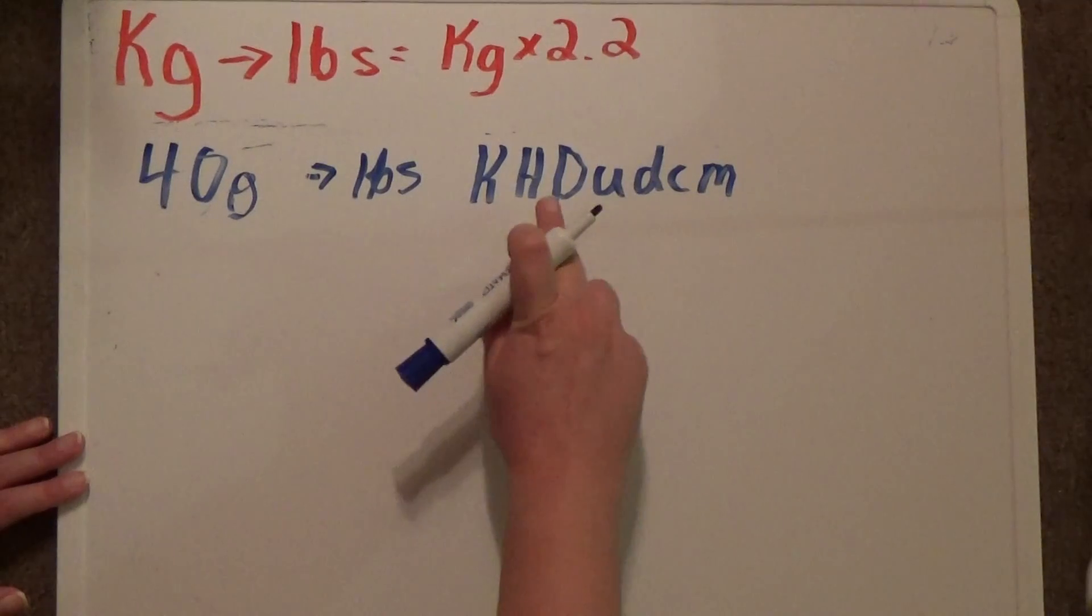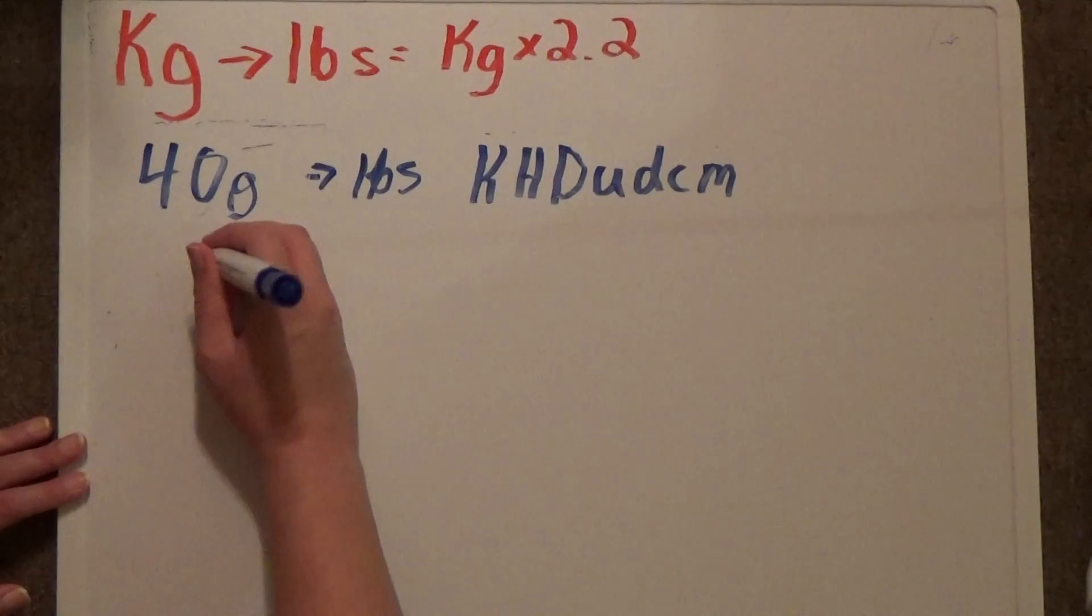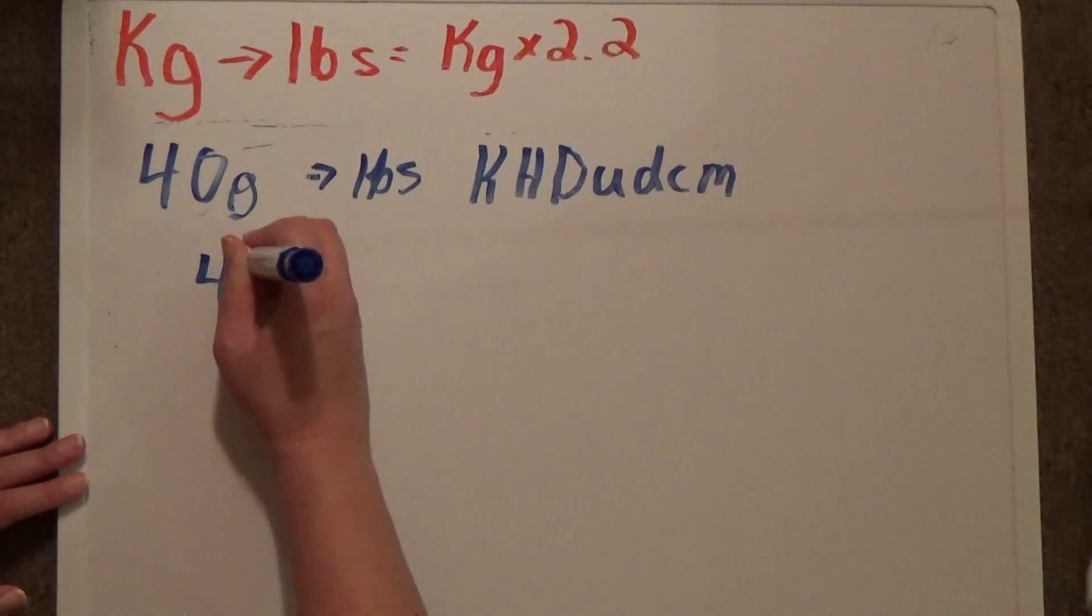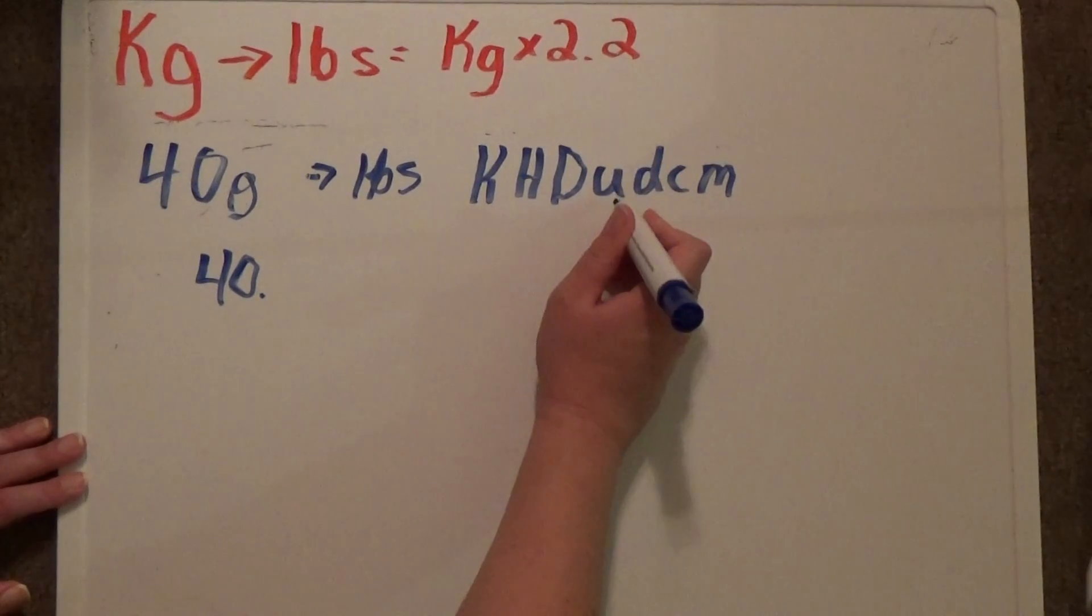Kilo, hecto, deca, uni, deci, centi, milli. I'm going to write down my 40 and put a decimal point behind it. Now I'm over here at grams,